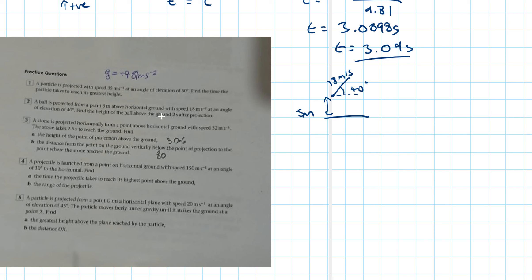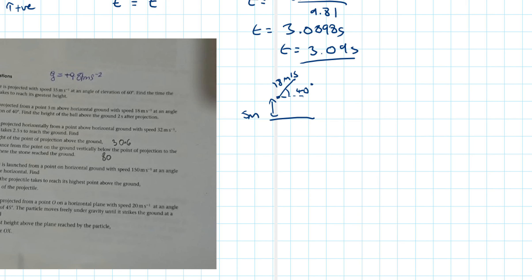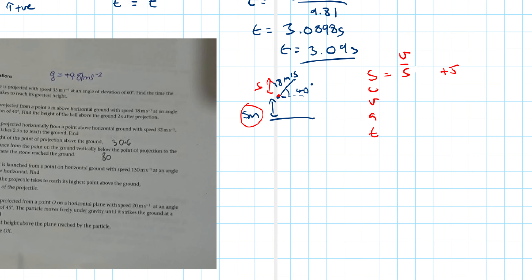We're interested in the height, so we consider the vertical SUVAT. An important note: s will only give the height gained from the launch point, so we must remember to add 5 to find the total height above ground. The vertical initial speed is 18 sin 40. We don't know final speed v. We set a reminder: final answer equals s plus 5.